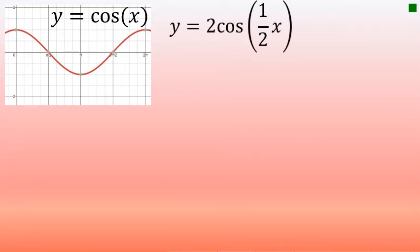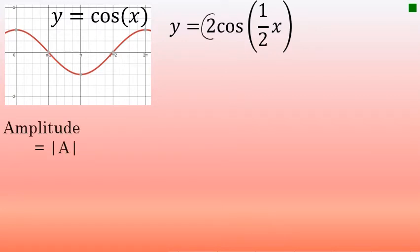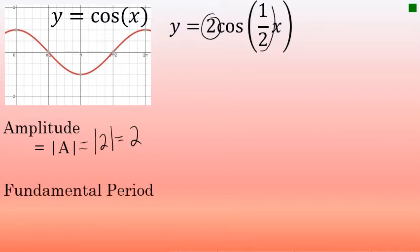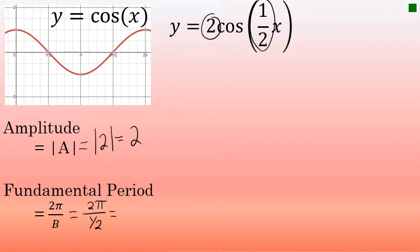For the second example, we'll graph y equals two cosine one half x. The amplitude is the absolute value of two, which is two. The fundamental period is two pi over b, where b equals one half. Dividing by one half is the same as multiplying by its reciprocal, two, so two pi divided by one half equals two pi times two, which is four pi.